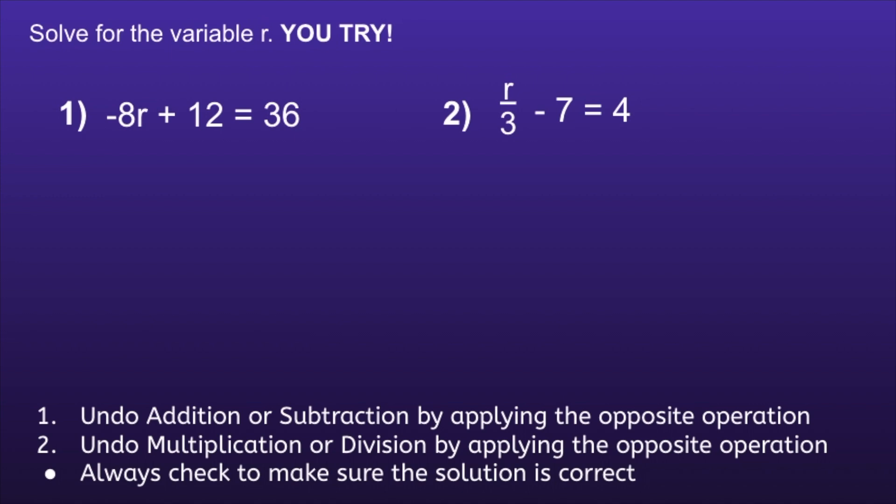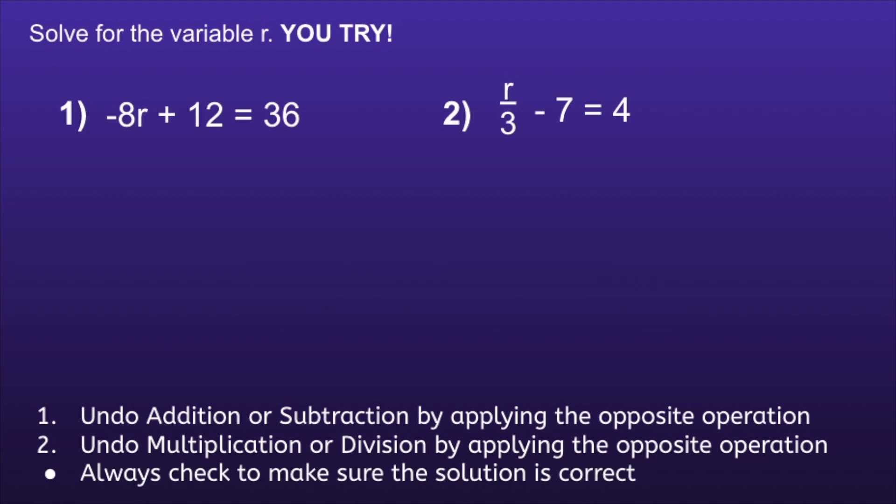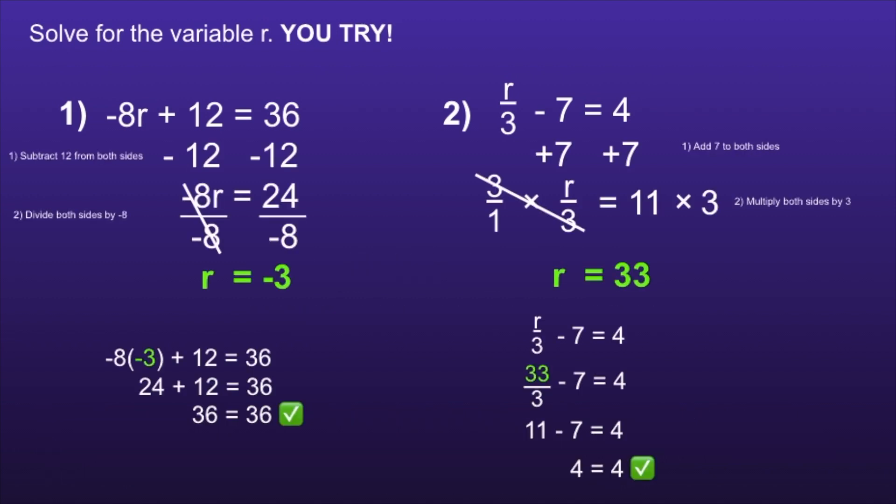I have two more problems on the screen I want you to solve. The first one is negative 8r plus 12 is equal to 36. The second one is r over 3 minus 7 is equal to 4. I would recommend you pause now, solve, and resume when you're ready to see if your solutions are correct. For number 1, the answer is r is equal to negative 3. For number 2, the answer is r is equal to 33. If you had either of these incorrect, I would recommend you pause and try to find your mistake. That's one great way to get better at algebra. Thank you for watching.